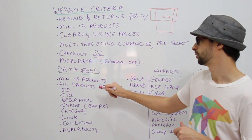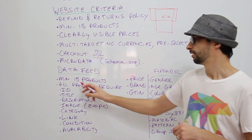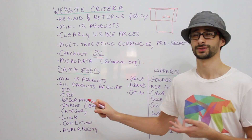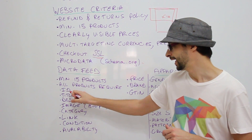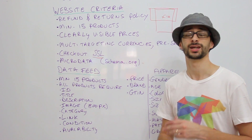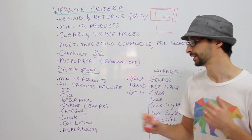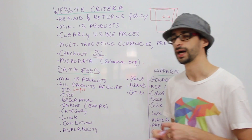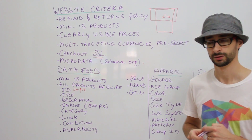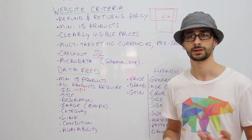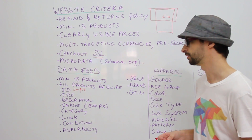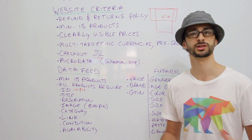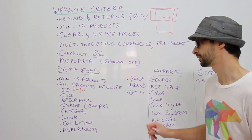Now to cover your data feed. As mentioned about your website, you need a minimum of 15 products. Each product requires a unique ID. This needs to be alphanumeric, which means any number or alphabet character — you can't use question marks, underscores, or spaces.